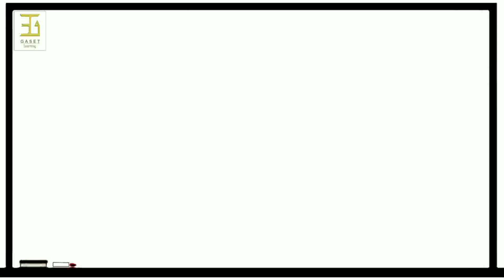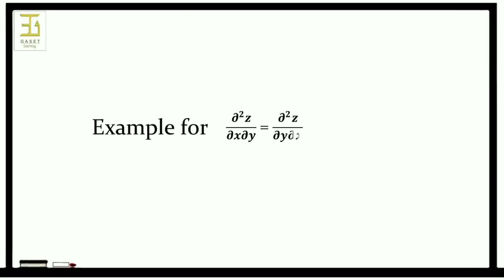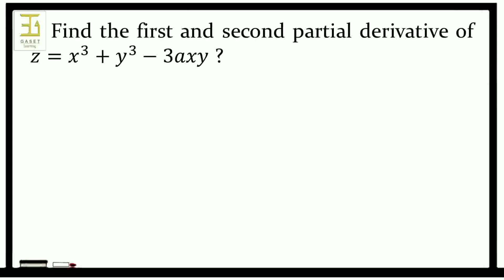Can you give an example to show that mixed partial derivatives are the same? The question is: find the first and second partial derivatives of z equal to x cubed plus y cubed minus 3axy. In order to solve this, we must first consider the equation of z.